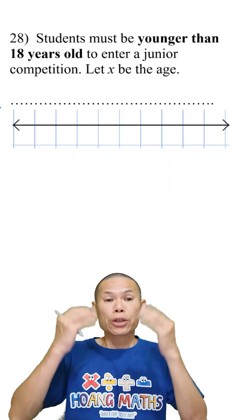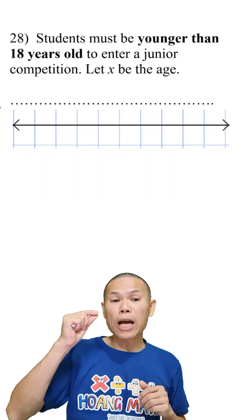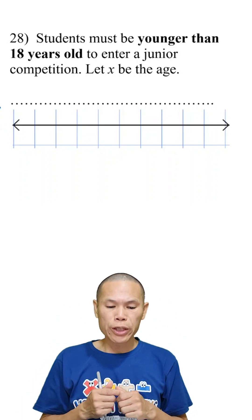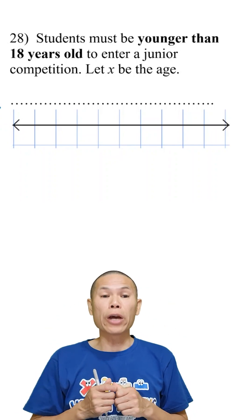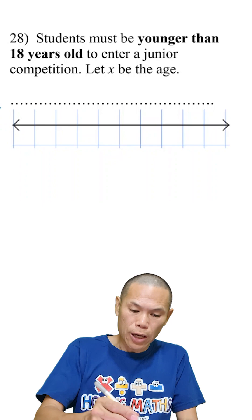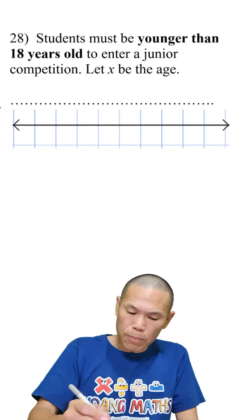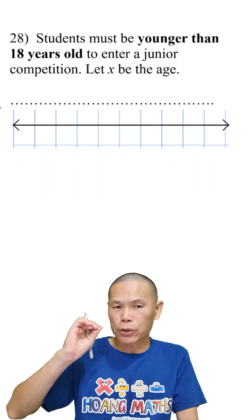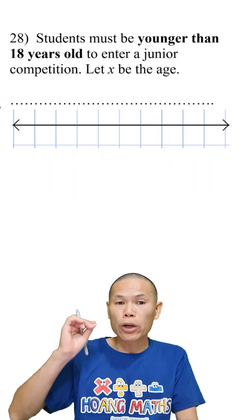Number 28: Students must be younger than 18 years old to enter a junior competition, so let x be the age. Okay, so younger than 18 years old, not including 18, because 18 years old is not younger than 18 years old.